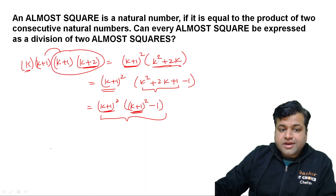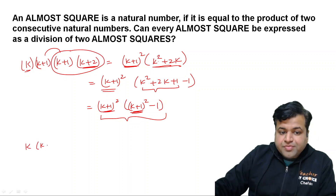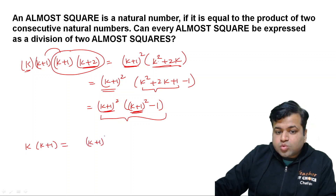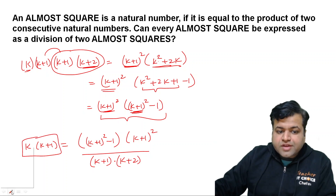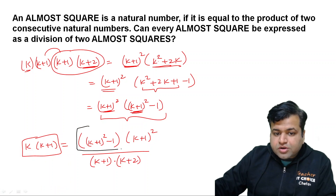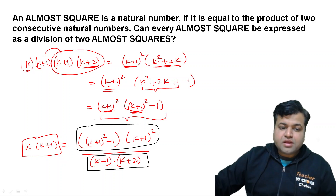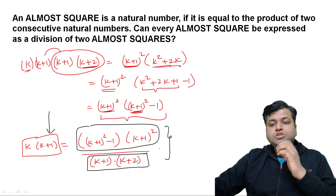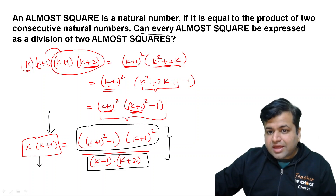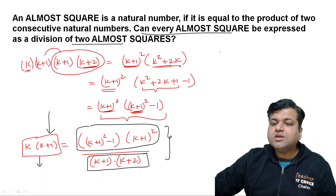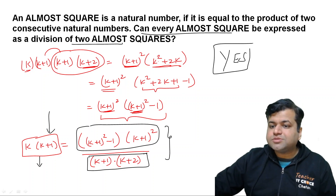So taking that to the right-hand side, k×(k+1) has become [(k+1)²-1]×(k+1)² divided by (k+1)×(k+2). The numerator is a product of two consecutive natural numbers — so it is an almost square. The denominator (k+1)×(k+2) is also a product of two consecutive natural numbers — also an almost square. So we have expressed an almost square as a division of two almost squares.